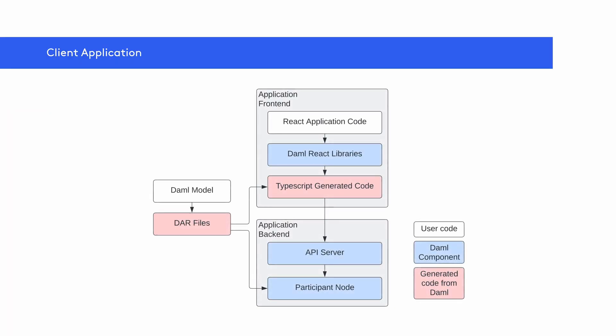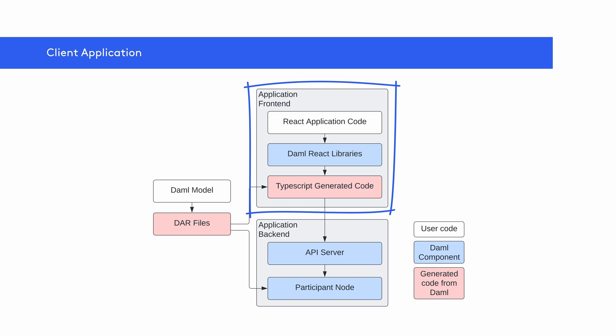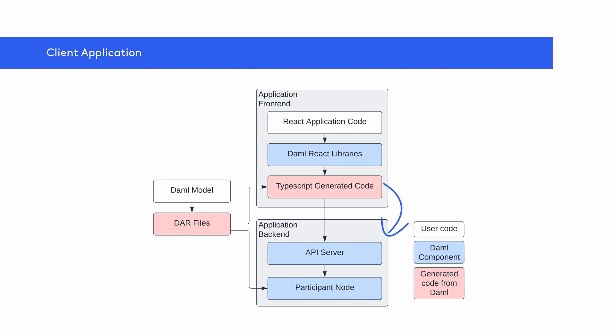Zooming in on the front-end side, DAML provides a React framework supported by DAML React libraries. While it's recommended that you use this framework, you can choose virtually any language for your front-end and interact with the ledger through an HTTP JSON endpoint. Using the code generation tools provided by DAML, the front-end code is converted into TypeScript, which then accesses the API server to use the underlying DAML model.